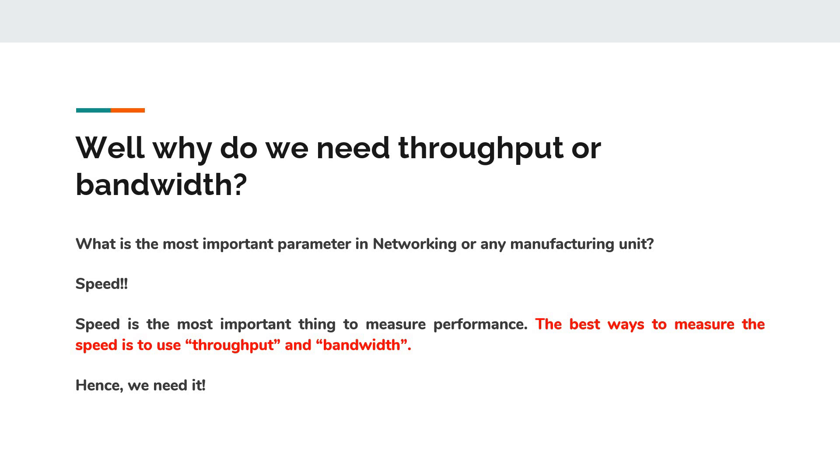What is bandwidth and why do we need it? What is throughput and why do we need to compare throughput with bandwidth? Well, the most important parameter or metric when it comes to networking or any manufacturing unit is speed. Speed is the most important metric used to measure performance, and the best ways to measure speed is to get the throughput and the bandwidth clearly understood.